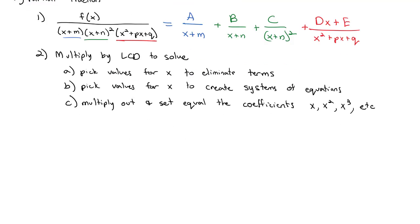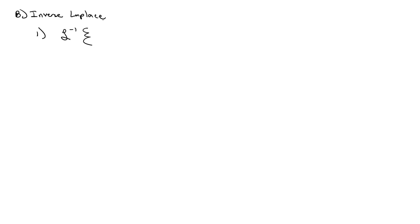Now let's actually find some inverse Laplace transforms using partial fractions. It's not uncommon to try and find the inverse Laplace transform of an expression like (x squared plus 1) over (s cubed minus 2s squared minus 8s). If you look at your table, there's nothing to match this form directly. So instead we'll use partial fractions to split it into a sum, because we know we can split the Laplace transform up by individual terms.